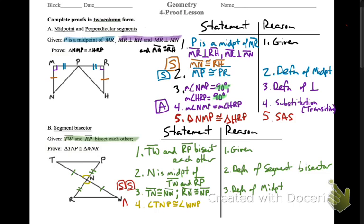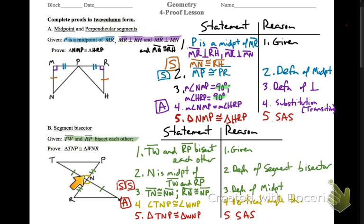Vertical angles right there. Angle TNP is congruent with angle WNP — that's the vertical angle theorem. So now we can say that the two triangles are congruent because we have the three pieces we need: side-angle-side. Please mark your diagrams. It helps you to see, and it helps me to know that you know what you're talking about. Alright, let's keep rolling.